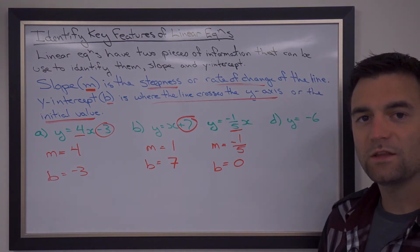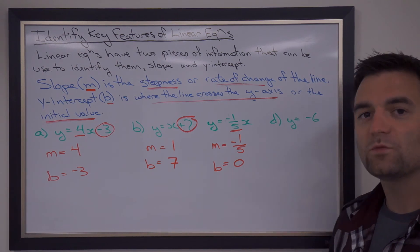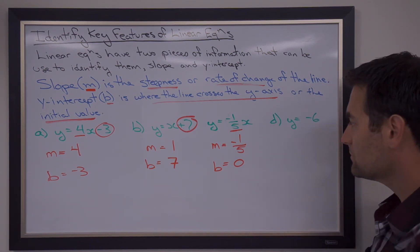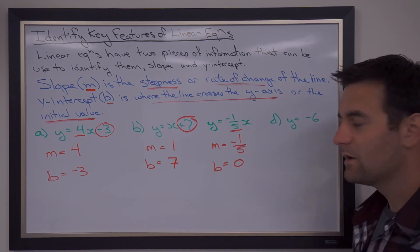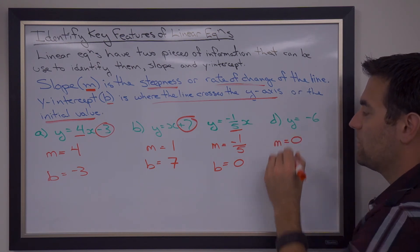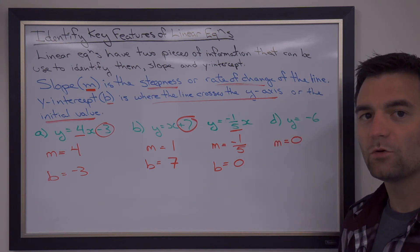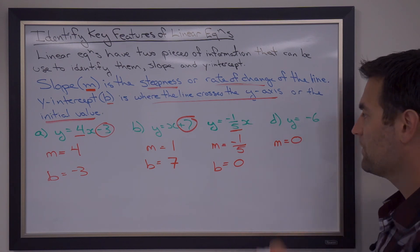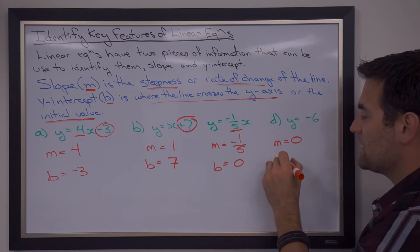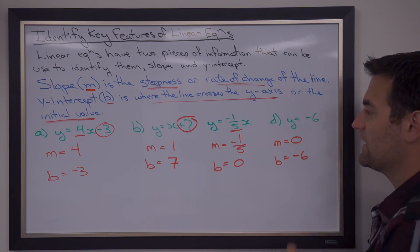The same happens in this last example. We have y equals negative 6. So there is no X there, so there is no slope, and when there is no slope, we say it's 0. We don't put no slope, we actually put the number 0. The B value in this case is that number by itself. It's the negative 6.